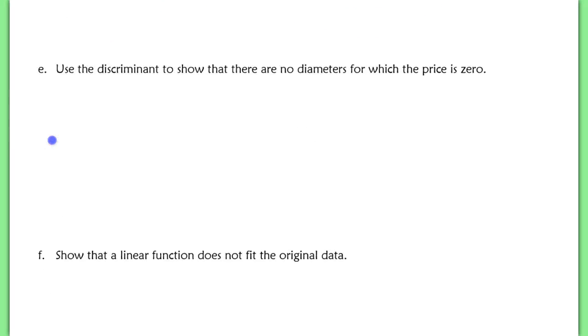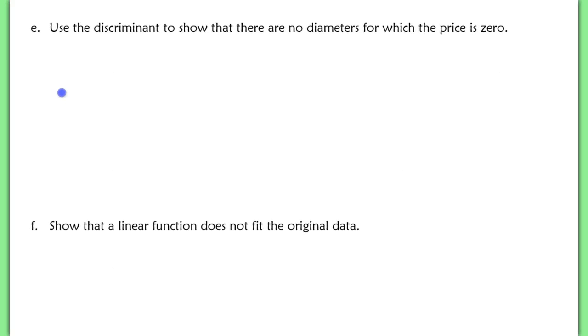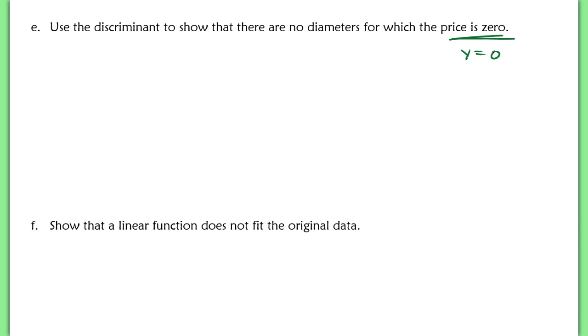Now, part E says use the discriminant to show that there are no diameters for which the price is 0. So the price being 0 is a y value. So y equals 0. We're asked to show, by using the discriminant here, b squared minus 4ac. Well, that means I need to know what b, a, and c are in my quadratic. So I'm going to set up my quadratic here. It's positive 0.01x squared minus 0.03x plus 0.45. This is saying let y equals 0. And when I do that, I have the same exact a, b, and c values.